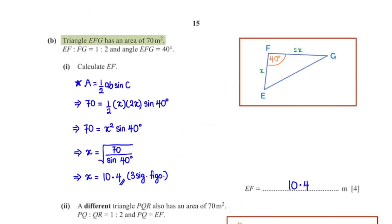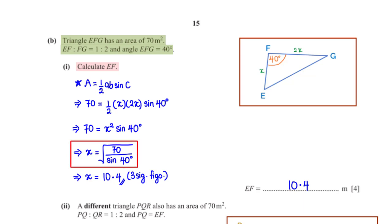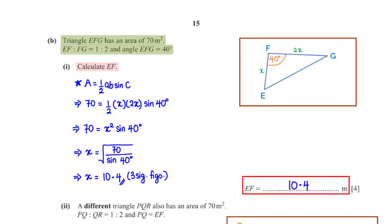Triangle EFG has an area of 70 m². EF to FG = 1 to 2, and angle EFG = 40°. Calculate EF. Using the formula: area = 1/2 × EF × FG × sin(angle). If EF = x, then FG = 2x. So 70 = 1/2 × x × 2x × sin 40°, which simplifies to x² × sin 40° = 70. Solving for x and typing into the calculator gives EF = 10.4, rounded to three significant figures.